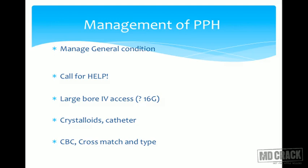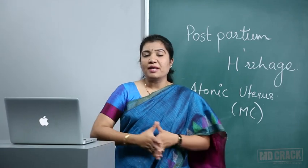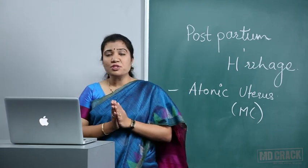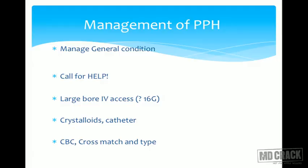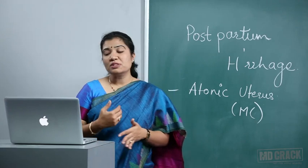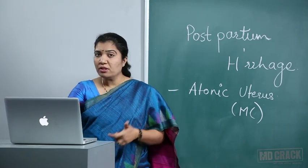PPH is an obstetric emergency. Every obstetrician must know its management. The first step is to manage the general condition of the patient — assess pulse and BP. Call for help, as this is an emergency. Insert a large bore IV cannula, preferably on both sides. Start pushing crystalloids until blood is arranged. Insert a catheter to monitor urine output and kidney function.